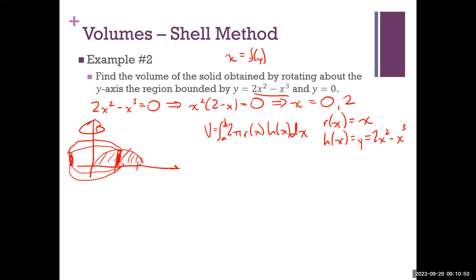We're going to integrate in terms of x, so we don't have to do any solving, which is good, because for this cubic I don't even know if that's possible. The bounds are 0 and 2. So the integral from 0 to 2 of radius times height. I think that's a good setup for that integral. Any questions on where that integral came from before we calculate it?